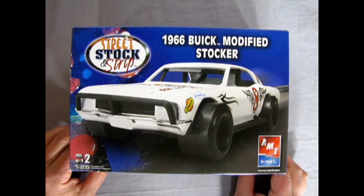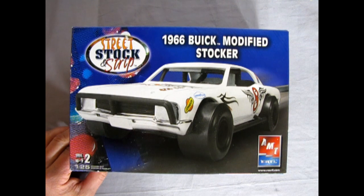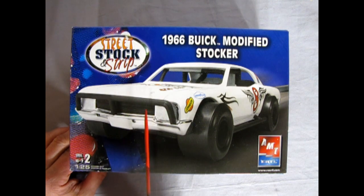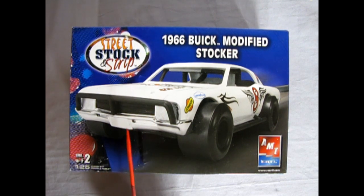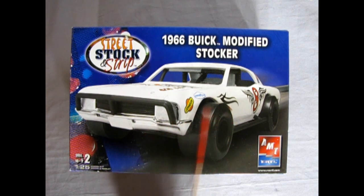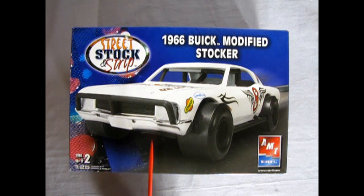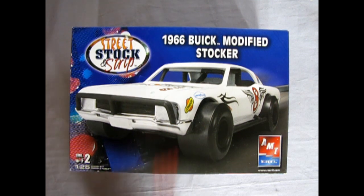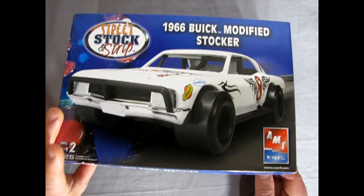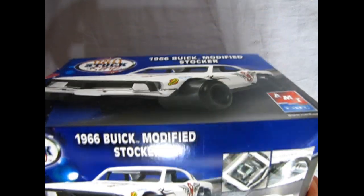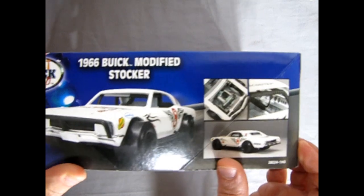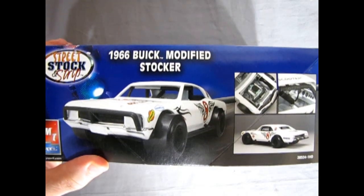So now here we have our box and I do believe it doesn't quite say yet so maybe like in the last Oldsmobile review I actually found on the bottom of the chassis it was molded in which car this was. So I do believe, just looking at this, that this is the Buick Grand Sport, the GS for the year. Although we will see as we open this thing up if I'm correct or not.